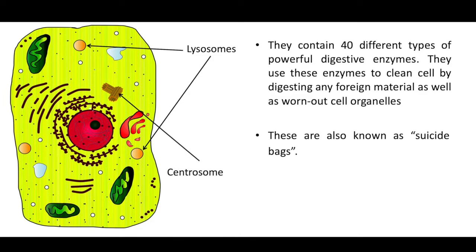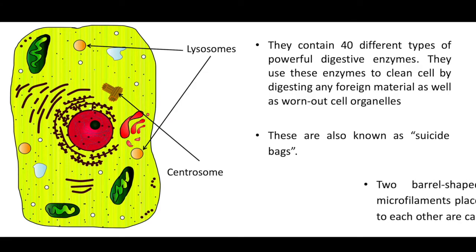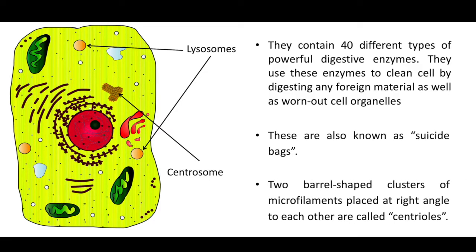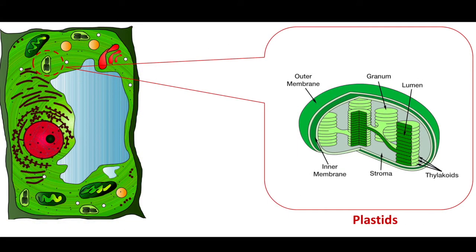The centrosome is present in animal cells only. It consists of two barrel-shaped clusters of microfilaments placed at right angles to each other, called centrioles. They initiate and regulate cell division. Plastids are present only in plant cells; their function is to manufacture and store food in plants.